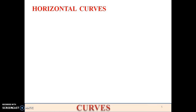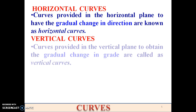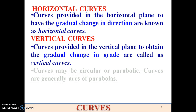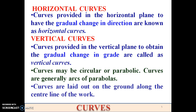According to the topography, curves can be classified as horizontal curves and vertical curves. Horizontal curves are provided in a horizontal plane to have a gradual change in direction. Vertical curves are provided in a vertical plane to obtain a gradual change in grade. These curves may be circular or parabolic — vertical curves are generally arcs of parabolas — and curves are laid out on the ground along the center line of the work.